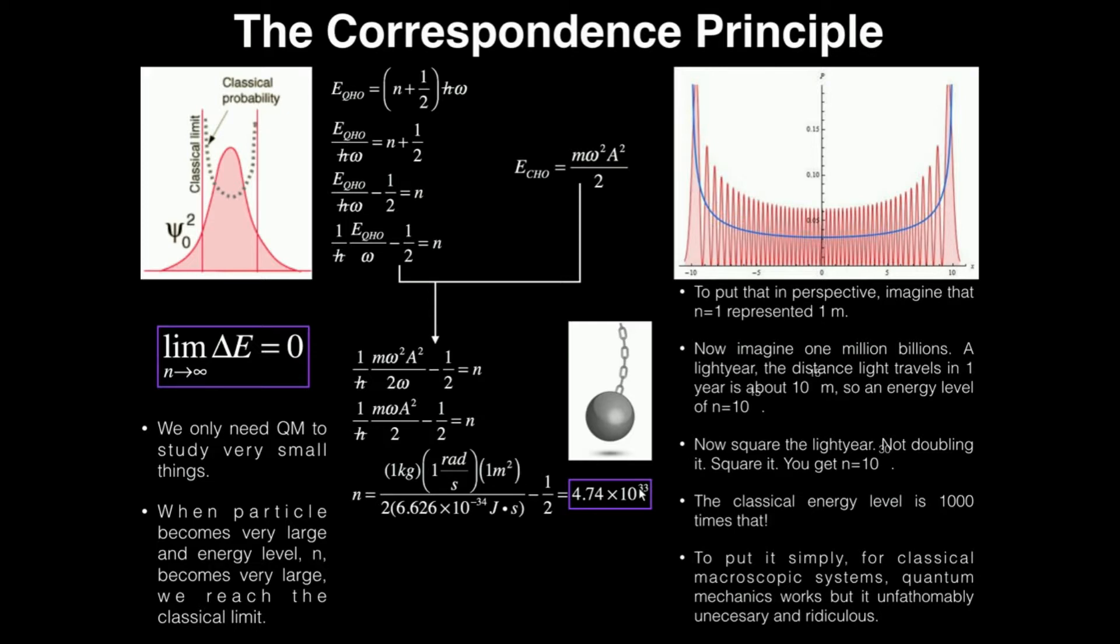This is an absolutely monstrous enormous number. To put it in perspective, suppose n equals one is one meter. Imagine one million billions. A light year, the distance light travels in one year, is 10 to the 15th meters. If n equals one is one meter, then one light year goes with an n of about 10 to the 15. Square that light year—that's 10 to the 30th. The classical energy level is a thousand times that. The point is when you have a classical particle like a wrecking ball oscillating and crashing into a building for demolition,